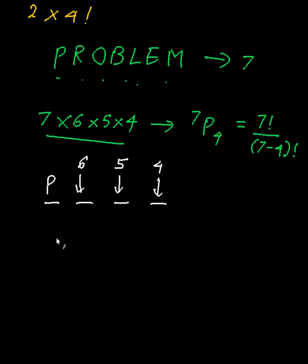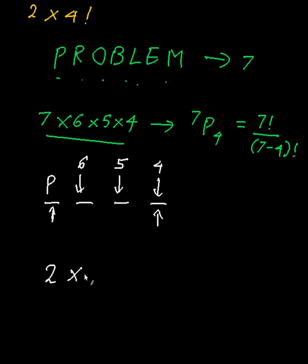If I say P can be on either end, the special condition is that P has to be at one of the ends. P can be placed in two places — either the first or the last position. So there are two ways to place P, and the remaining three gaps give six times five times four.